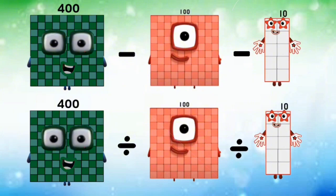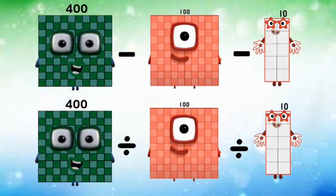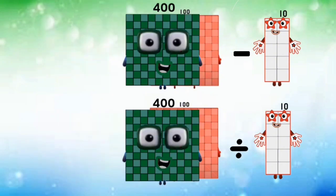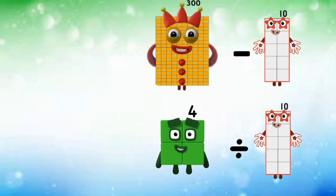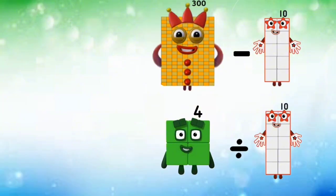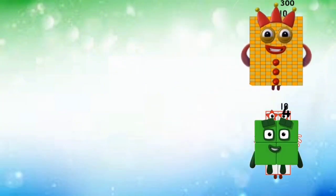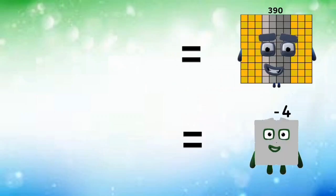400 subtracted and divided by 100 equals 304. 300 minus 10 and 9 divided by 10 equals 390 and negative 4.